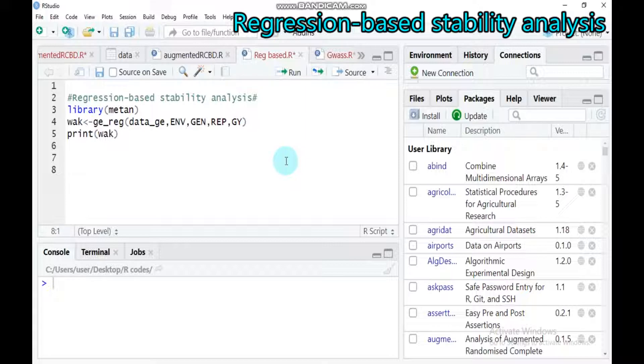In order to measure or check the regression-based stability analysis, parameters such as mean, the regression coefficient, and deviation from the regression are considered as part of the suggestions of Evert and Russell for assessing the stability of different genotypes. So the stability parameters, the mean, the regression coefficient, as well as the deviation from the regression line, are considered as measures of the yield stability of a particular genotype.